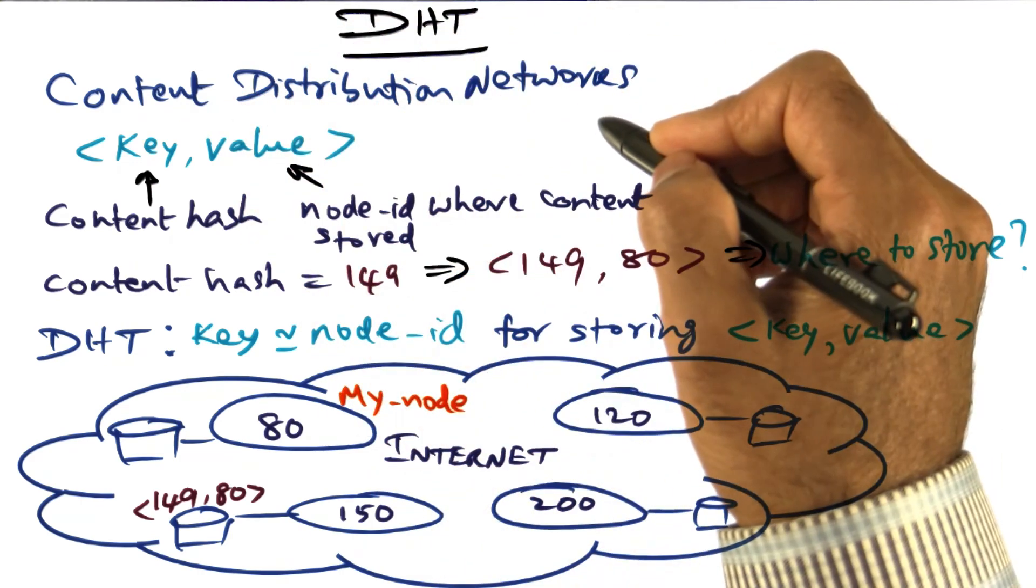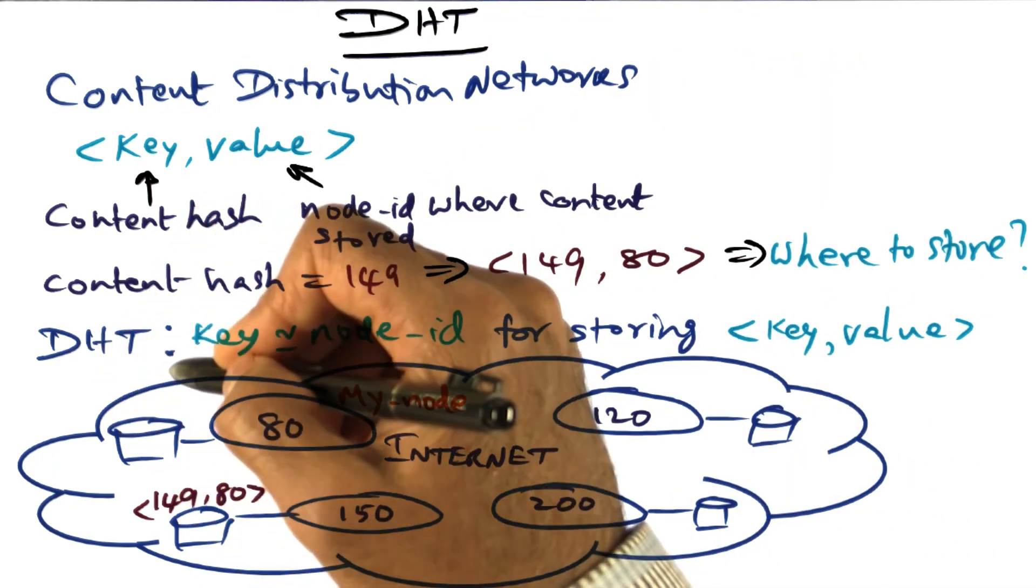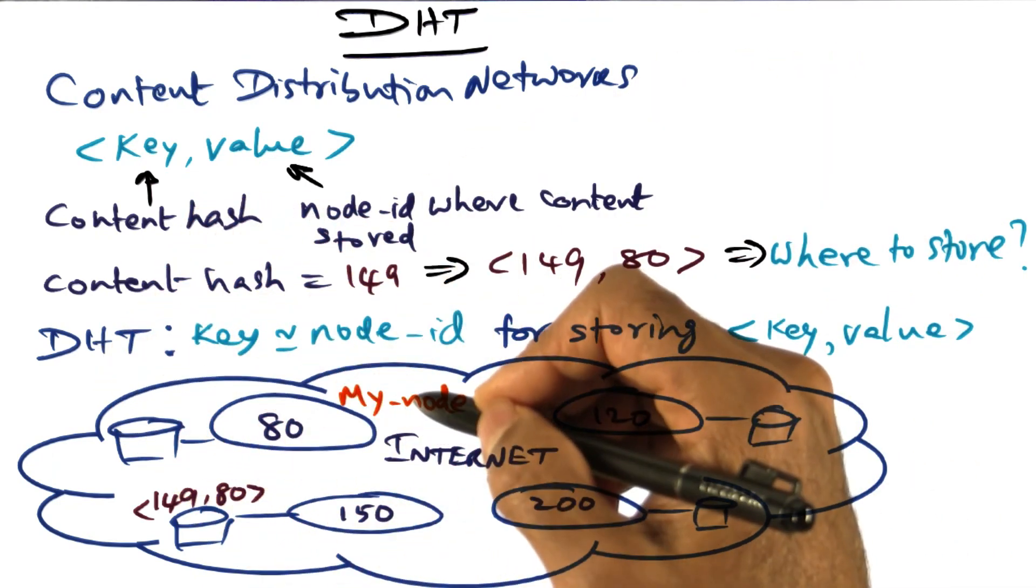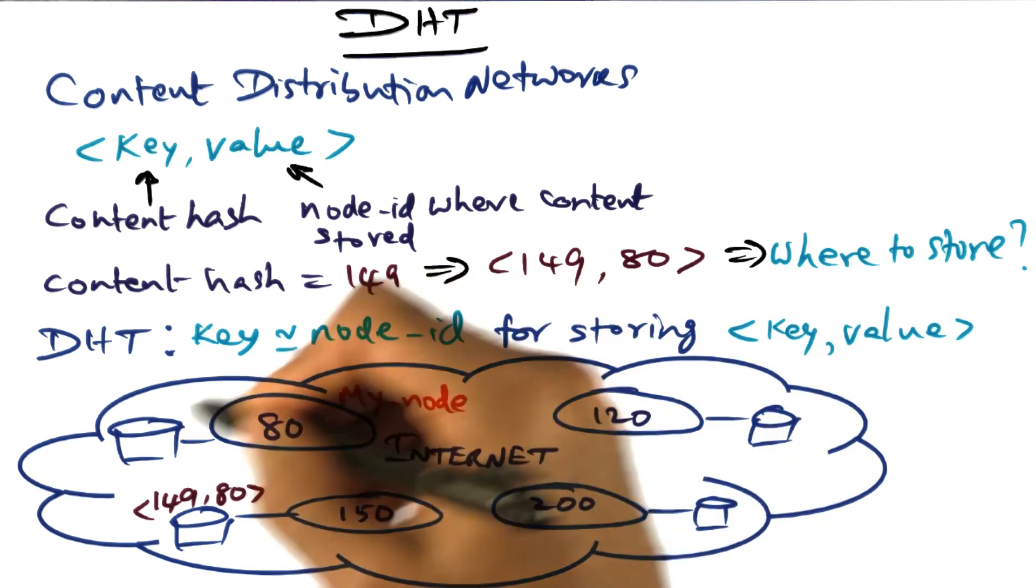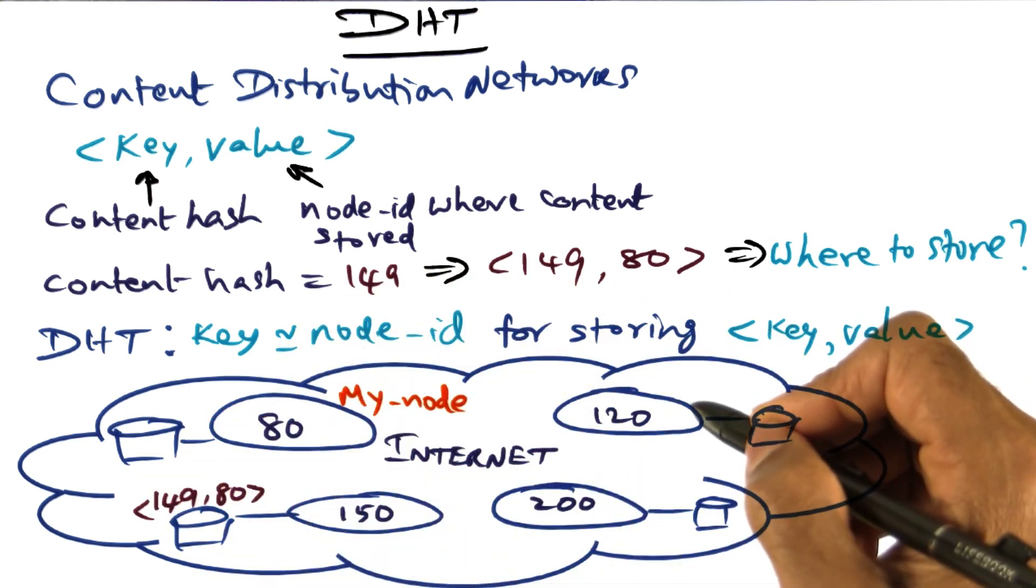This is how content distribution networks exploit the distributed hash table technology to store content on the internet so that they can be discovered and disseminated to the users.